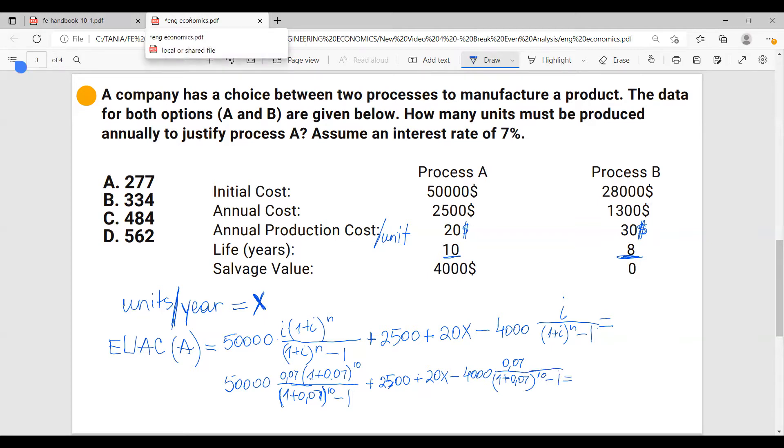1 plus 0.07, all power 10, minus 1. And now calculating this, you'll get 7,118.9 plus 2,500 plus 20X minus. And then 4,000 multiplied with that, you get 289.5. And all of this equals to 9,329.4 plus 20X. So this is the equivalent uniform annual cost for process A.